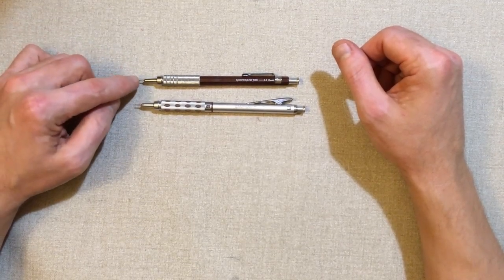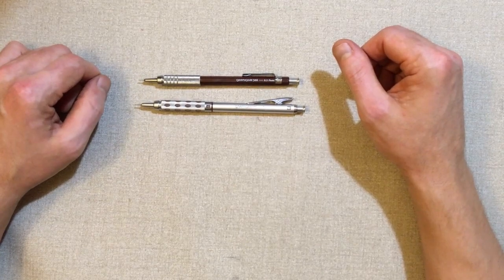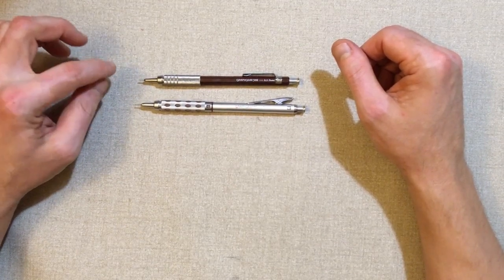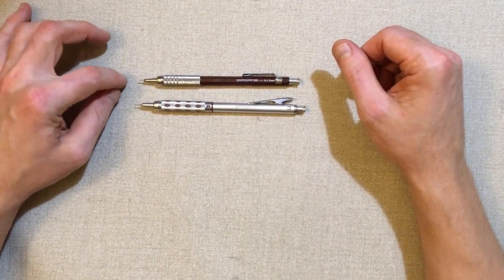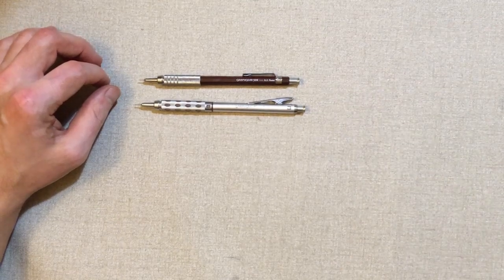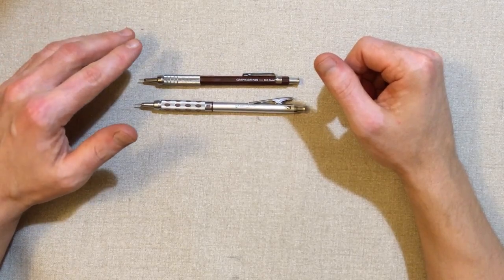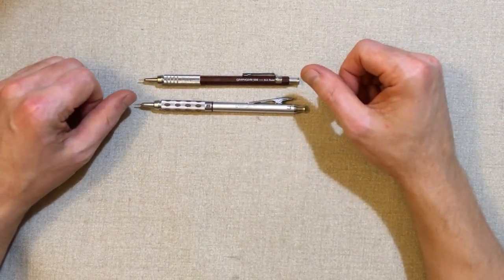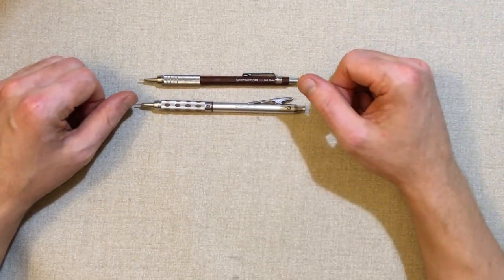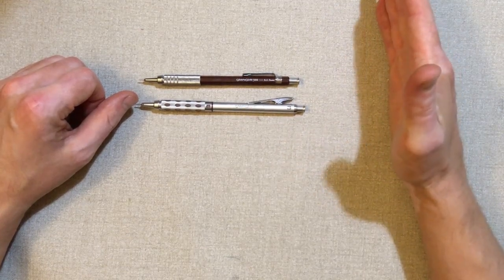The 0.3 I like, it really allows me to get some fine lines down. I actually have seen a 0.2 as well, which is even finer. So most of the sizes you'll see would be 0.3, 0.5, 0.7, 0.9, which is starting to get thicker. Then they have a one millimeter, and a two millimeter, which I'll show you here in a second.